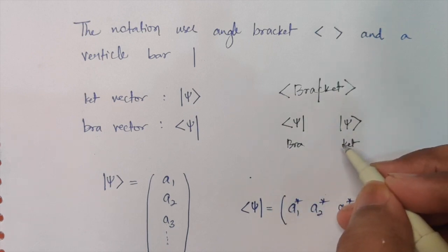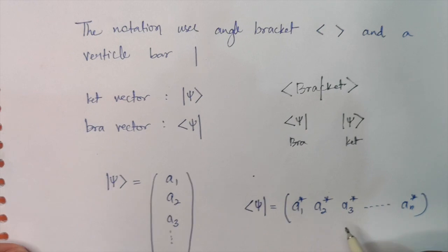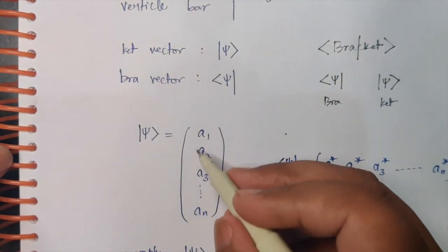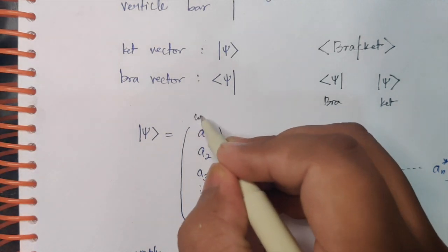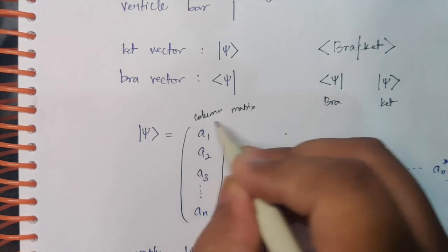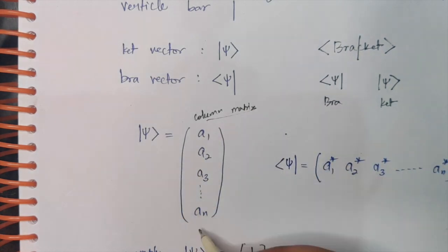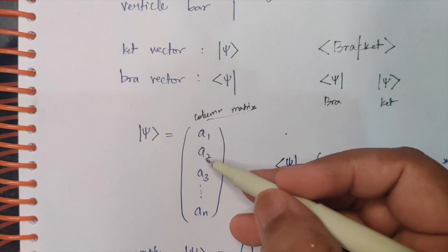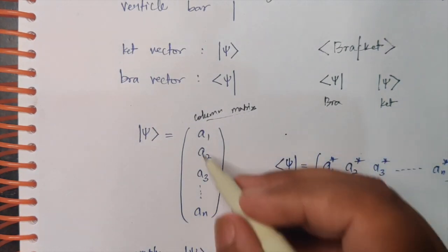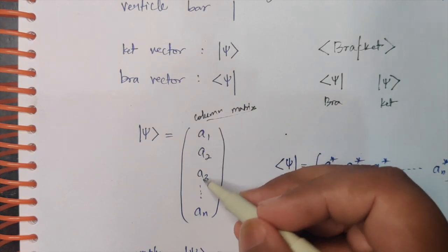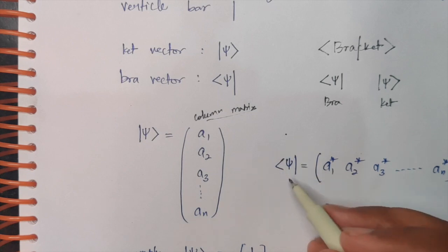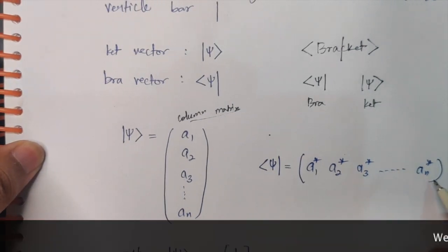Now what do these actually mean? A ket vector is always expressed in matrix form as a column matrix. You express it in the form of a column matrix — if there are n number of elements, you have one column and n rows. So it's a matrix of A1, A2, A3 and so on. The bra vector corresponding to that ket vector will be expressed as the row matrix.